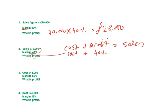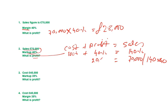Markup profit is forty percent, cost is one hundred percent, so sales is one hundred and forty percent. The selling price is seventy thousand, so: seventy thousand divided by one hundred and forty, times by forty. The answer is twenty thousand profit, and therefore the cost would be fifty thousand.